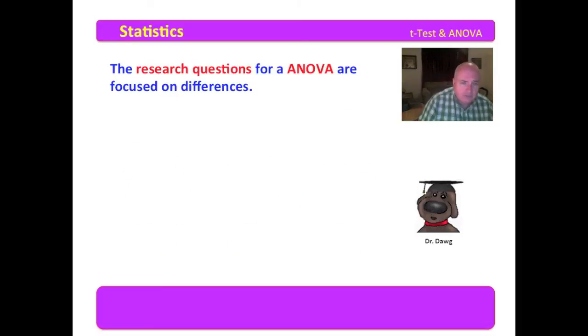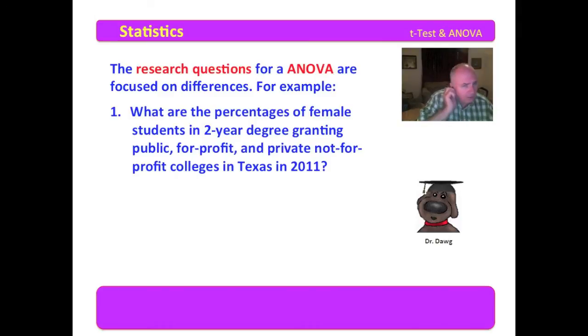Now the research questions for ANOVA are focused on differences. You will recall that the first question should be a descriptive question. And in this one, the data set that we're going to run says, what are the percentages of female students in two-year degree granting, public, for-profit, and private, not-for-profit colleges in Texas? So we have three groups, the public, the for-profit, and the private, not-for-profit colleges. And then we're going to look at one dependent variable, which is the percentages of female students. So this is the descriptive question.